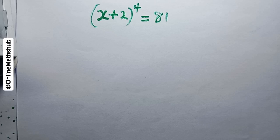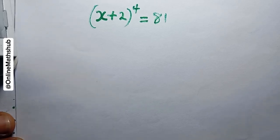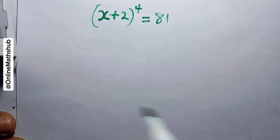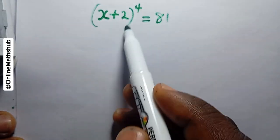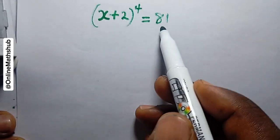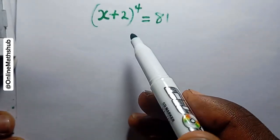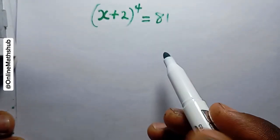Hello friends, welcome back to Online Math. We're going to be solving this equation in this video. What we have is (x + 2) to the power 4 is equal to 81.